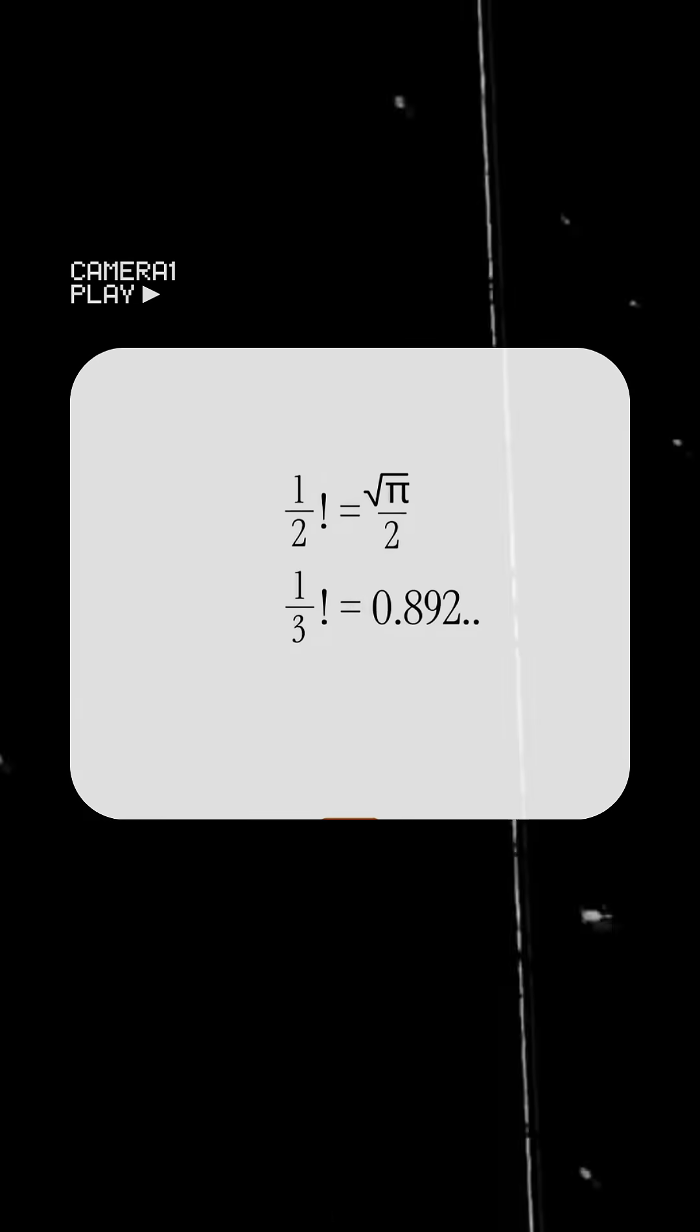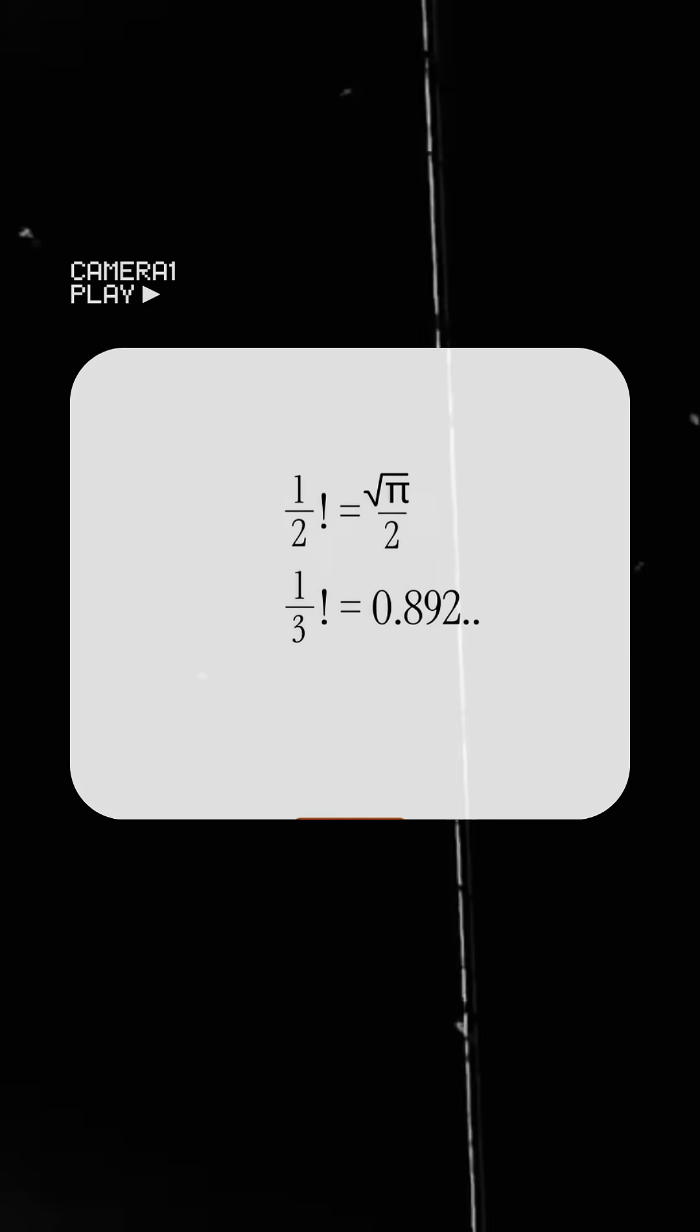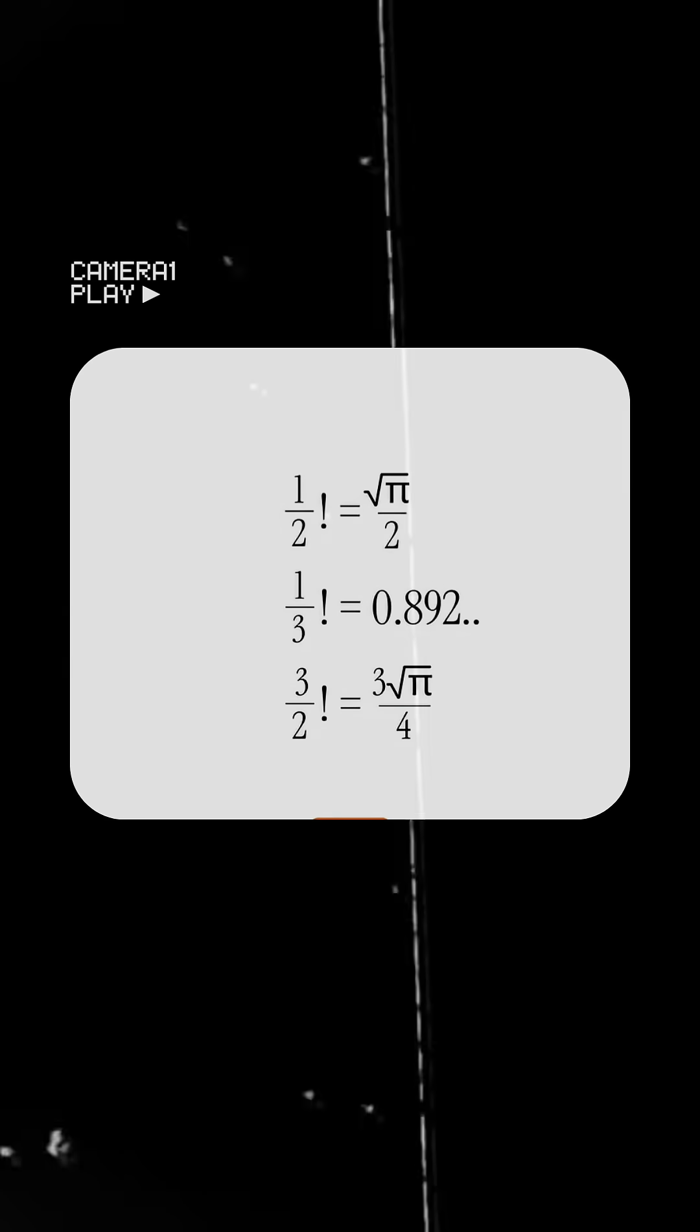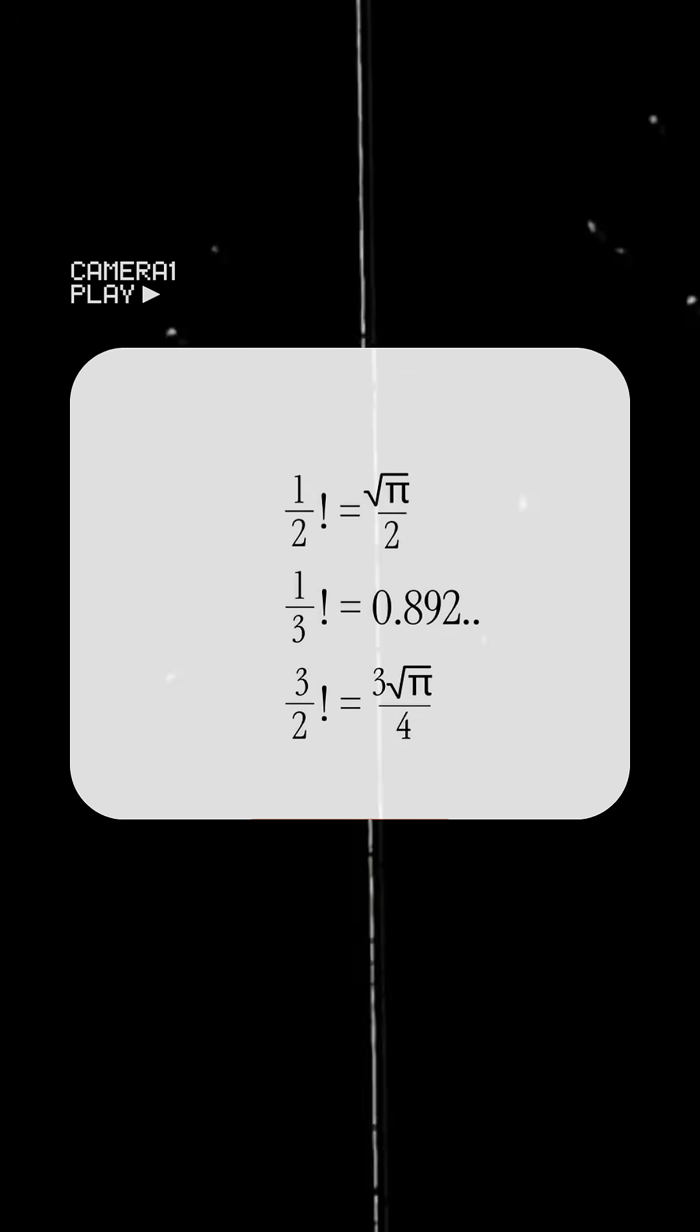Similarly, 1/3 factorial is 0.892, and 3/2 factorial is 3/4√π, and so on. Got it.